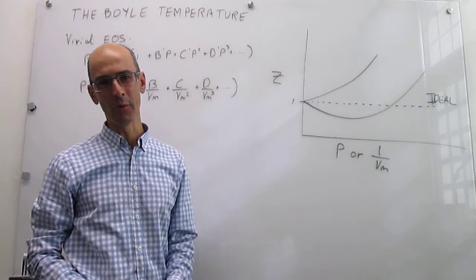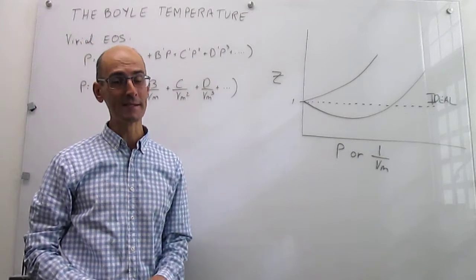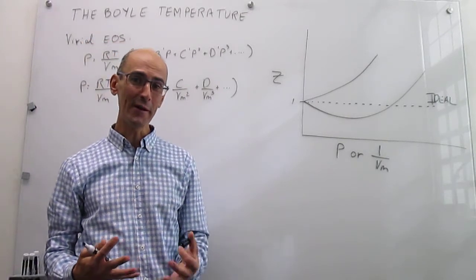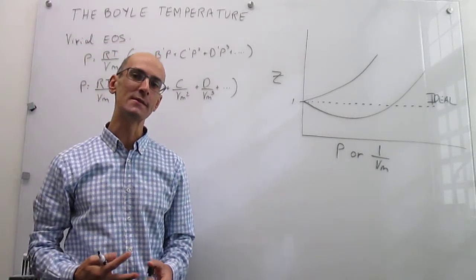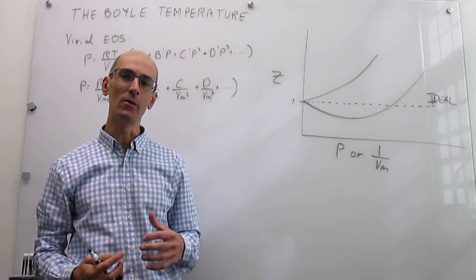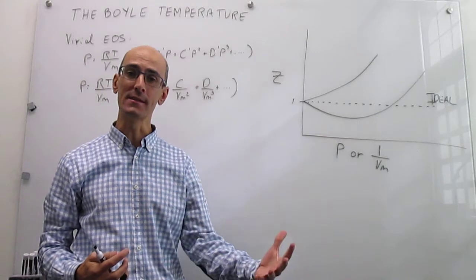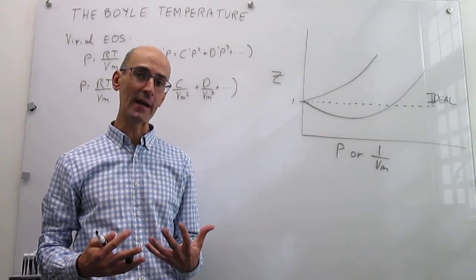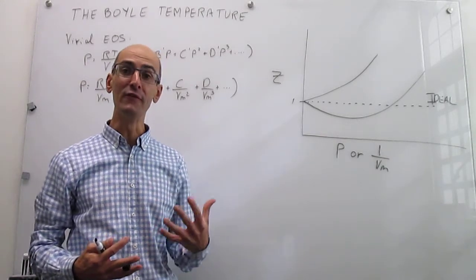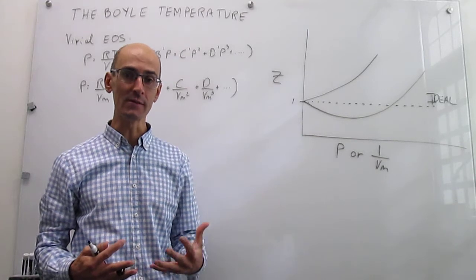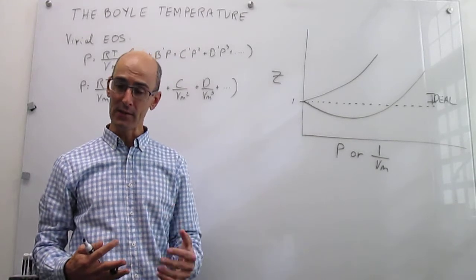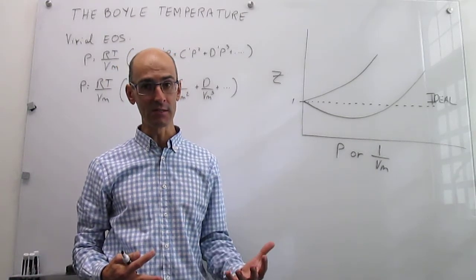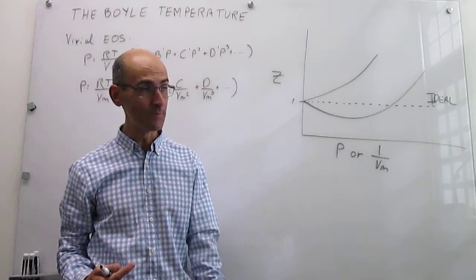In this video we describe the Boyle temperature. In a prior video we have seen how real gases deviate from ideality and how we can come up with a virial equation of state that in principle is able to capture those deviations from ideality.